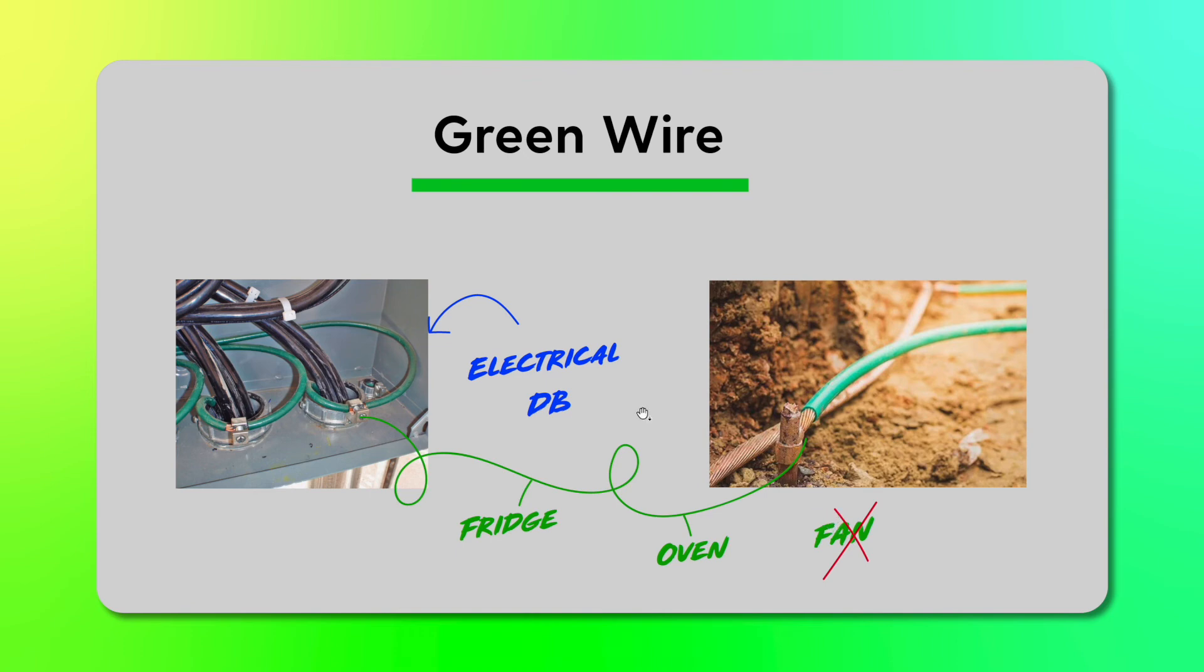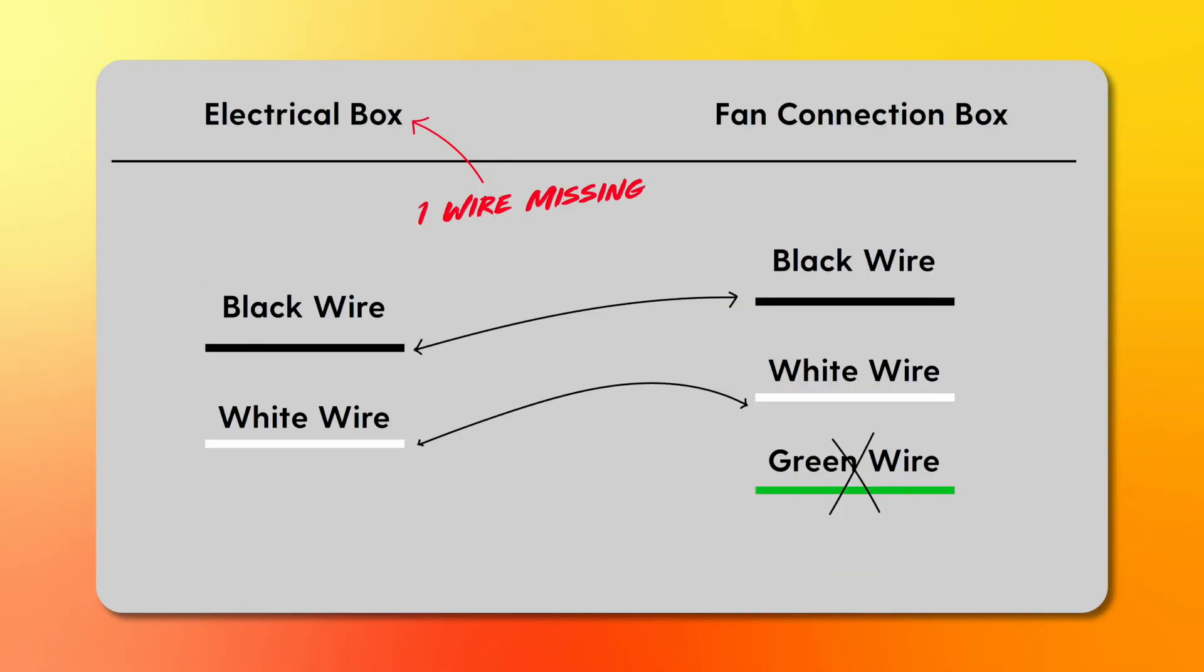So now what to do if you need to connect your ceiling fan with these two wires? This is what you can do and what are your options. The first option is that you just simply connect the black wire with the black wire of your fan, the white wire with the white wire of your fan.